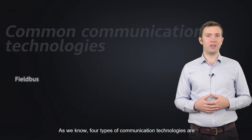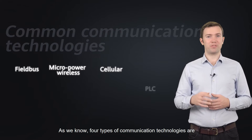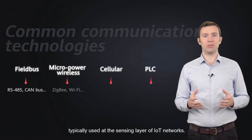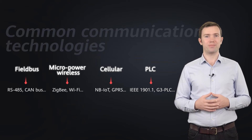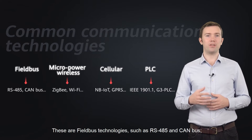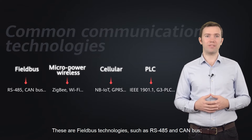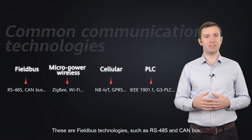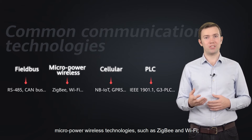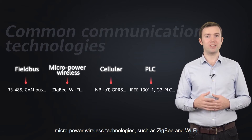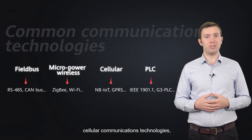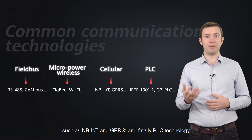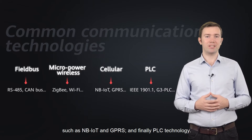As we know, four types of communication technologies are typically used at the sensing layer of IoT networks. These are field bus technologies such as RS-485 and CAN bus, micropower wireless technologies such as Zigbee and Wi-Fi, and cellular communications technologies such as NB-IoT and GPRS.